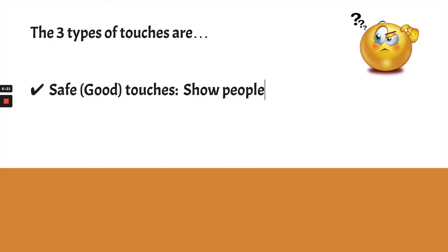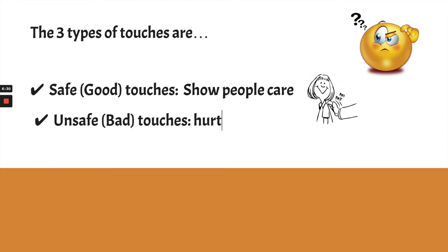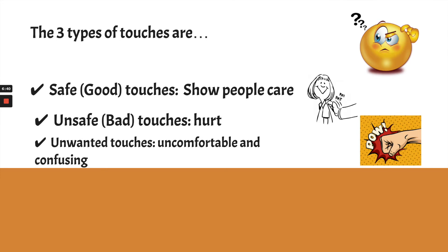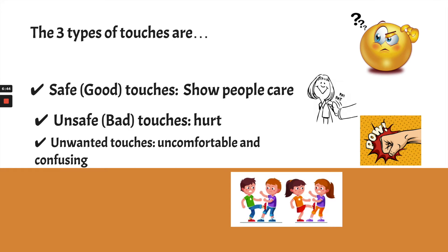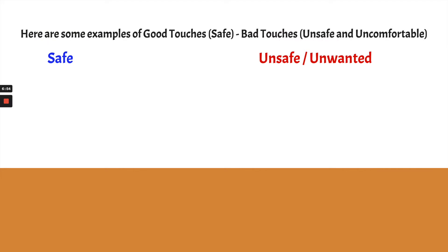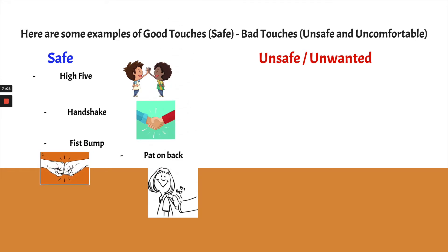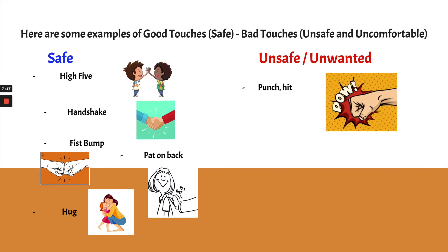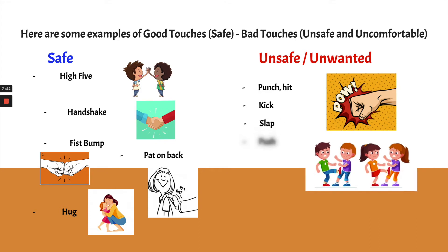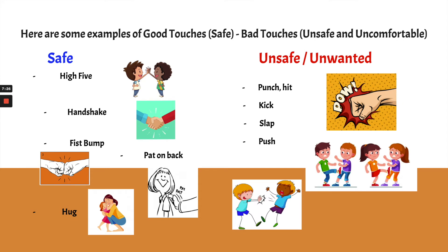The three types of touches are: one, safe good touches — these are touches that show people care about us, like a pat on the back. Two, unsafe bad touches — these are touches that hurt our bodies. And three, unwanted touches — these are touches that make us feel uncomfortable and/or confused. If we start feeling uncomfortable or confused, that's a good signal it's an unwanted touch. Examples of safe touches: high five, handshake, fist bump, pat on the back, a hug from someone we know and trust. Examples of unsafe/unwanted touches: punching, hitting, kicking, slapping, or pushing.